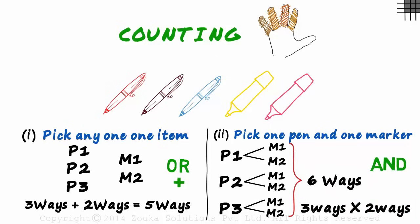AND is another rule of counting. It always means multiplication. One pen and one marker: three ways multiplied by two ways. One pen or one marker: three ways plus two ways. If you understand these two rules of counting, trust me, you will be able to solve most problems based on permutations and combinations.